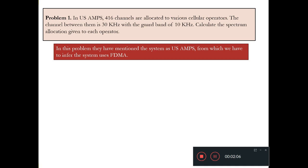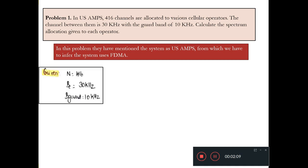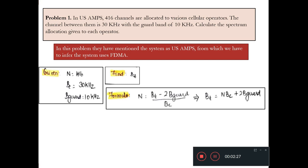Let's write down the given values: N = 416, channel bandwidth BC = 30 kHz, guard band B_guard = 10 kHz. We are asked to find BT, the total spectrum allocated to the operator. Using the formula N = (BT − 2B_guard) / BC, we rearrange to get: BT = N × BC + 2B_guard.